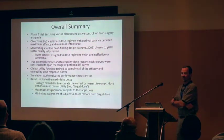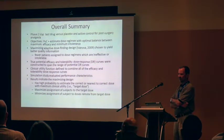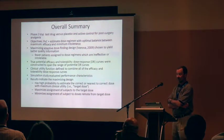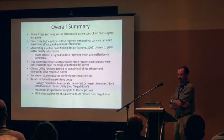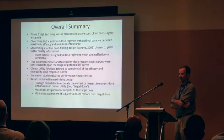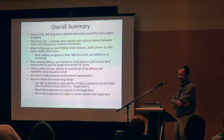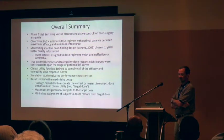This is an overall summary of where I'm going to end up and how I got there. This is a phase two trial versus placebo and versus active control in post-surgical analgesia. The objective is to demonstrate proof of concept and estimate the dose with optimal balance between maximizing efficacy while minimizing intolerance. We used a maximizing design published in 2009 for an application at Merck by Anastasia Ivanova, chosen to yield better quality information — in particular to assign fewer patients to dose regimens which are either ineffective or intolerable.